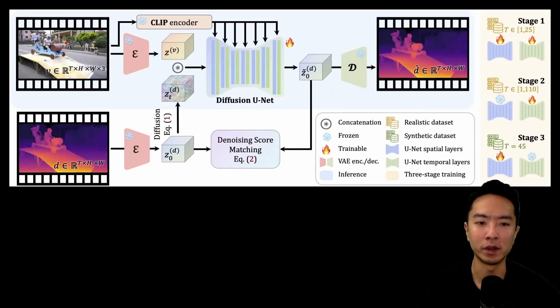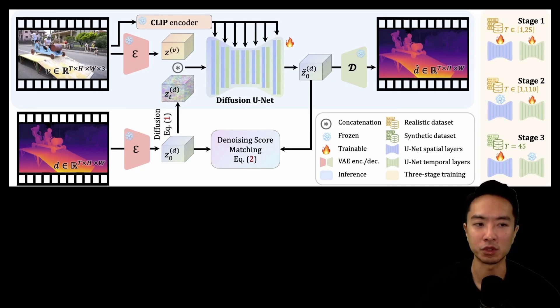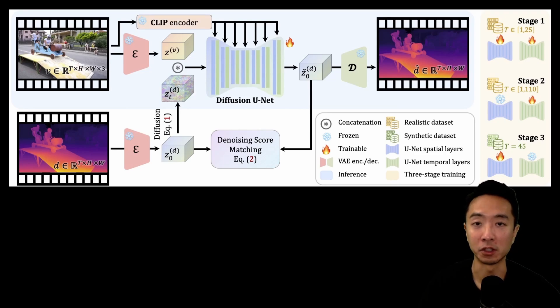They'll hold one frozen and the other one trainable and kind of switch between the two. And part of this is what makes it really good for video depth estimation because of how they do their training.